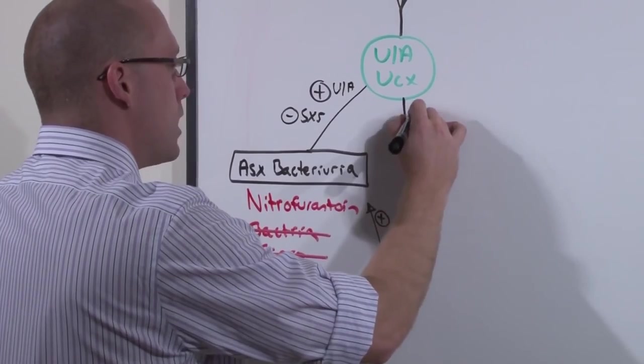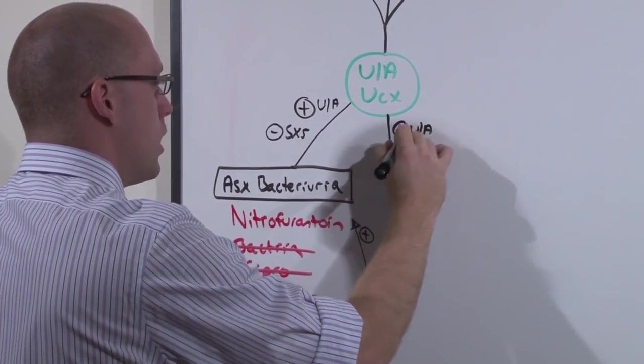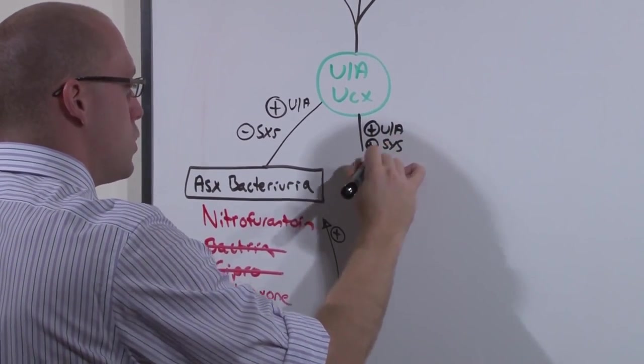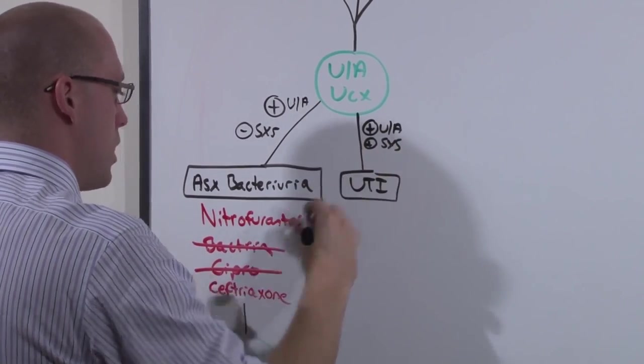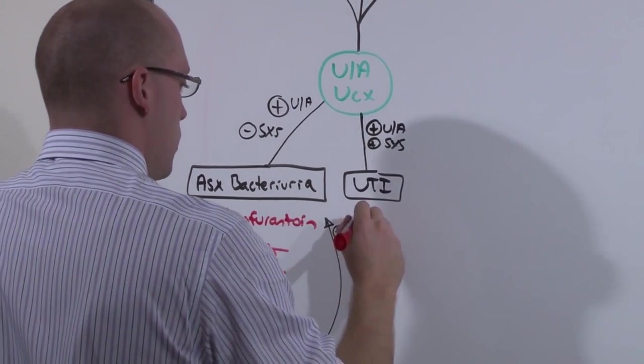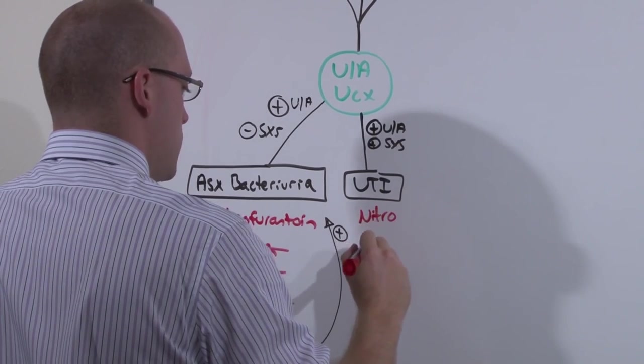But if you've got a positive UA and you've got positive symptoms, then you just had a UTI. And as we just learned, you only really have two options: nitrofurantoin and ceftriaxone.